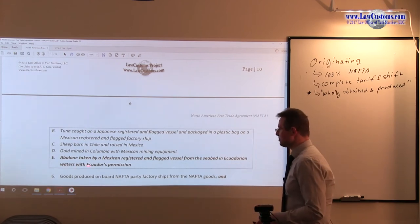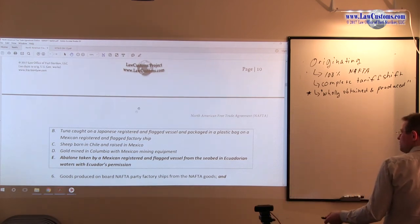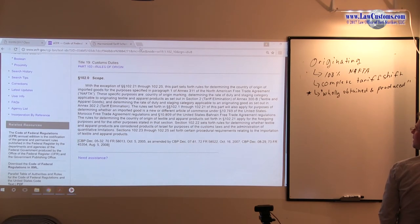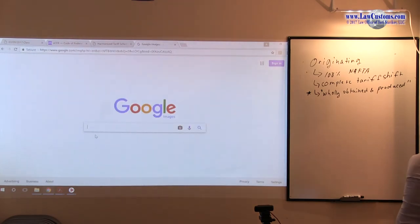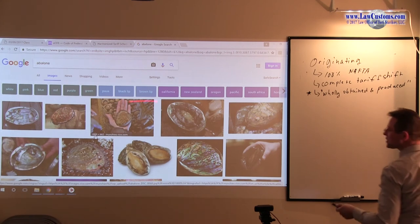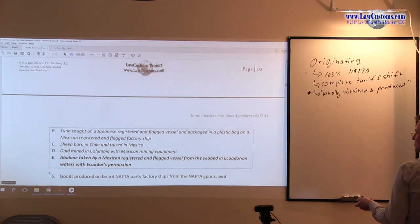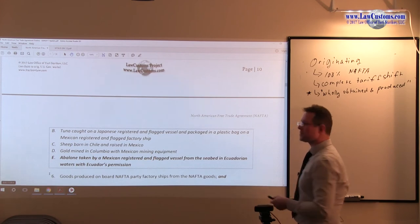Then you have abalone taken by Mexican registered and flag vessel from the seabed in Ecuadorian waters with Ecuador's permission. So you have abalone. Abalone is a mollusk. Apparently, I'm not that familiar with this type of seafood. But apparently, this is something that is for consumption. And it is taken by Mexican registered and flag vessel from the seabed of Ecuadorian waters.